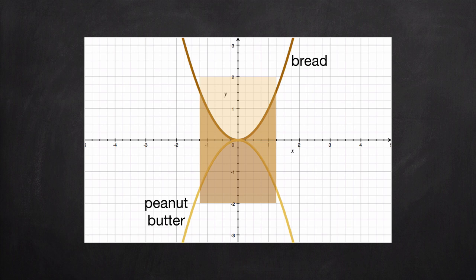At the point x equals zero, we've shown that peanut butter and bread are equal to one another. They both pass through the point zero, zero, so they sit right on top of one another.